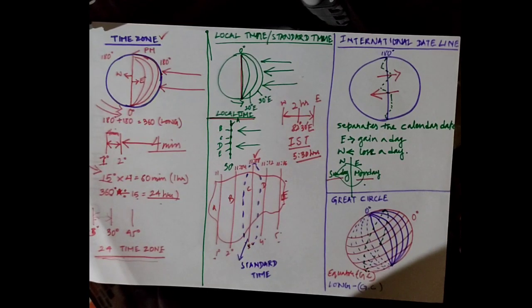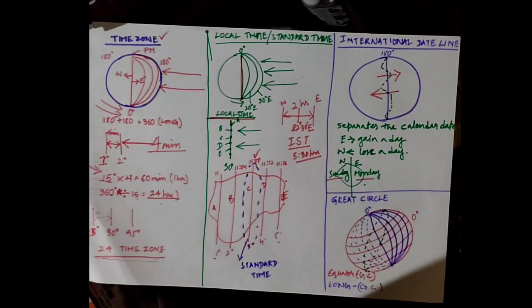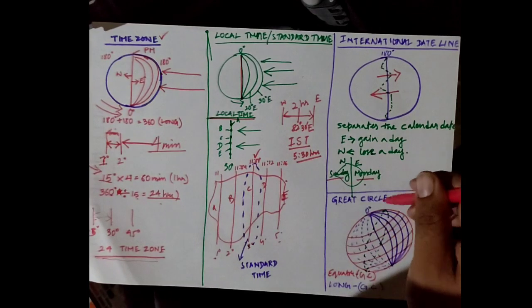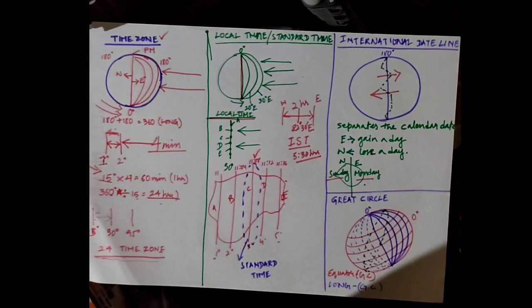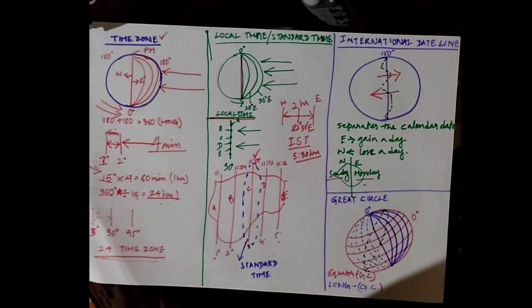Not only that, even if we draw a circle diagonally passing through the center of the earth and dividing it into two equal halves, it can also be considered a great circle. So those were the few concepts with regard to this chapter.